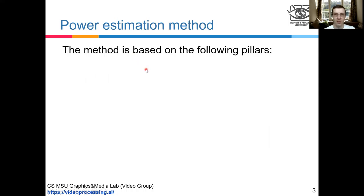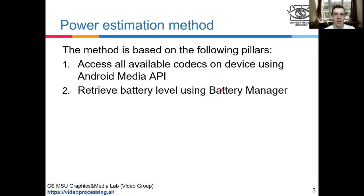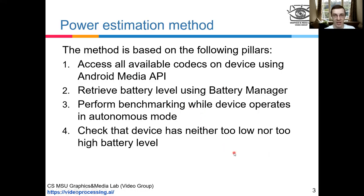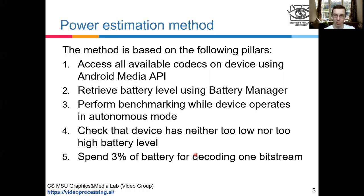The method implemented in our benchmark relies on the following approaches. We use the Android Media API to access all video decoders available on a given device. Battery Manager API helps to retrieve the current battery level. We ensure that during benchmarking the device is in autonomous mode and has neither too low nor too high battery level. We also spend three percent battery for decoding one bit stream.